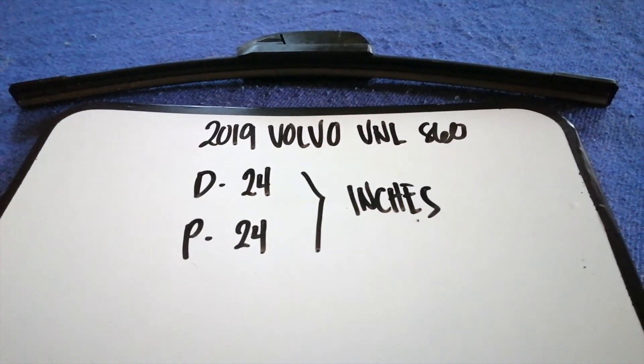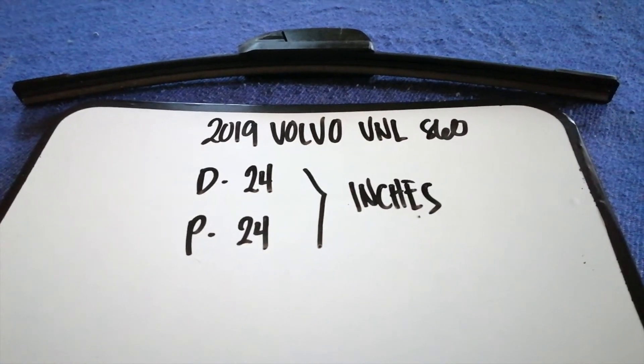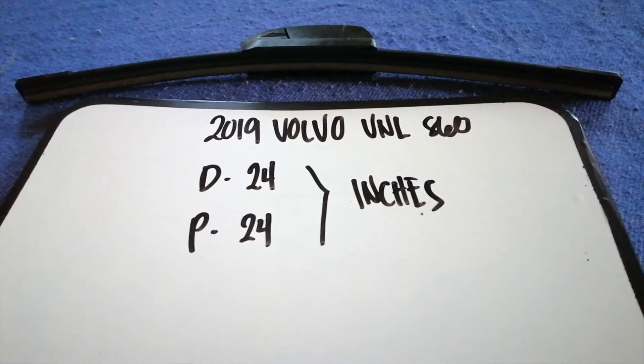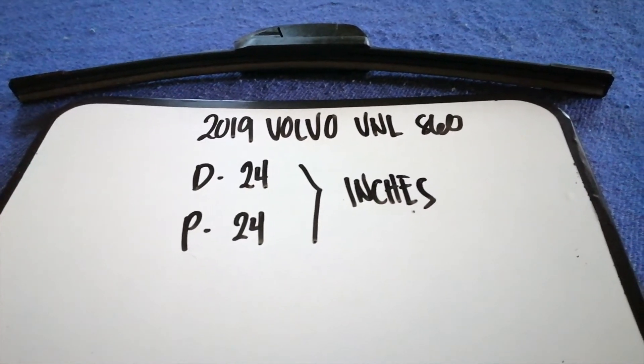So the wiper blade replacement size for the 2019 Volvo VNL860 is 24 inches for the driver's side and 24 inches for the passenger side.